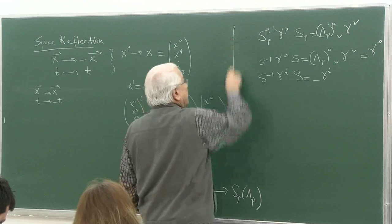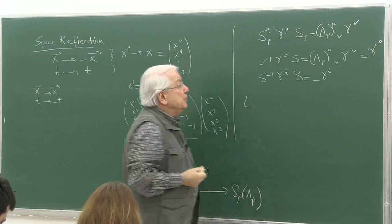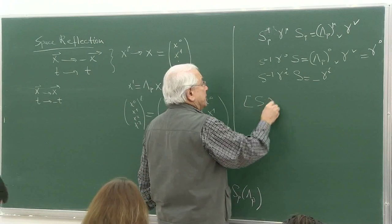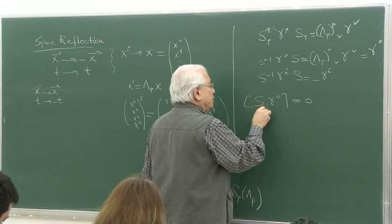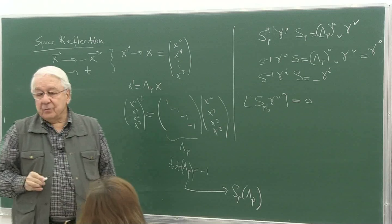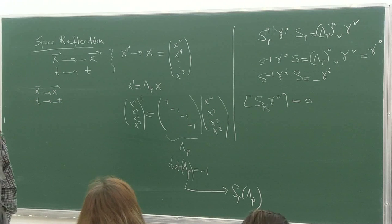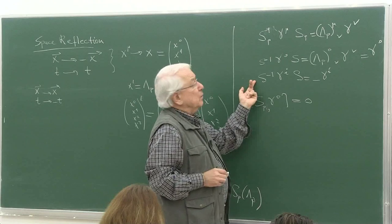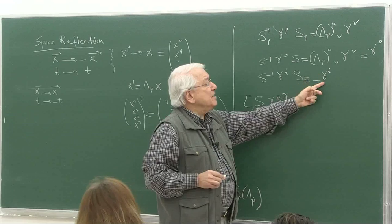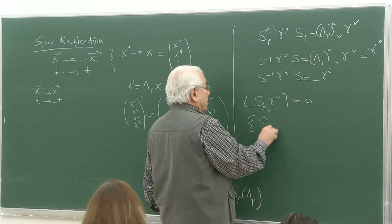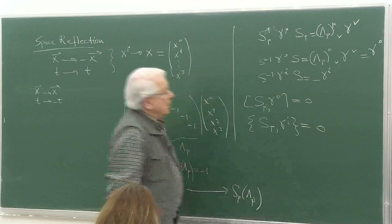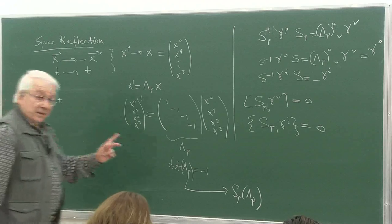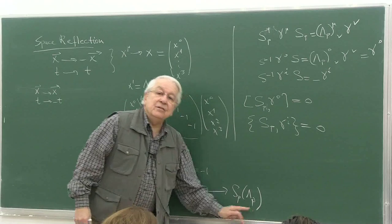Multiplying both sides by S_P, from the first relation: γ^0 S_P = S_P γ^0, meaning S_P commutes with γ^0. From the second relation: γ^i S_P = −S_P γ^i, meaning S_P anti-commutes with γ^i. These are the two sets of relations satisfied by S_P — the transformation in the spinor space which implements the reflection operation.